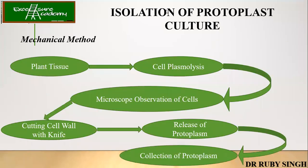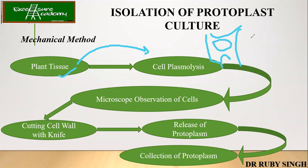Here, a flowchart has been given. You have the plant tissue, you perform plasmolysis — changing the solute concentration so that the cell shrinks and leaves the cell wall. Then you can make a cut with a fine knife, releasing the intact protoplast. You then observe under the microscope, which helps in selecting good plant cells. Finally, the protoplast is collected. This is why the method is tedious — the cells are very small and you have to observe under the microscope, which takes lots of focus.